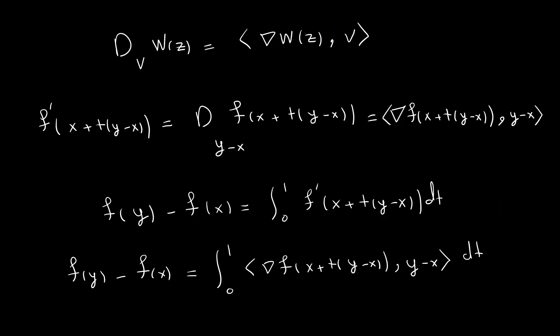The formula for the directional derivative of function w at point z along direction v is simply the inner product between the gradient of w at z and v. So let's apply this formula to our function. We want to find f', which is the directional derivative along direction y minus x. This gives us the inner product of the gradient of f at x plus t(y−x) with (y−x).